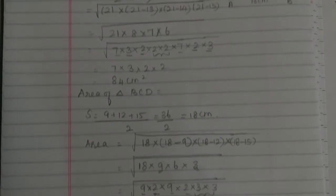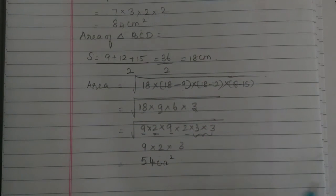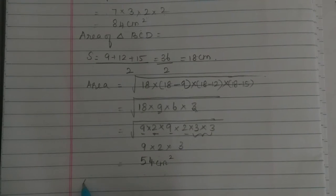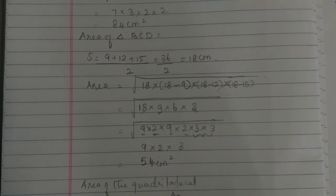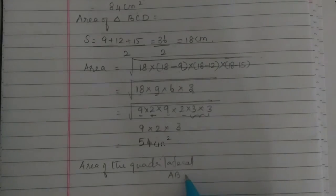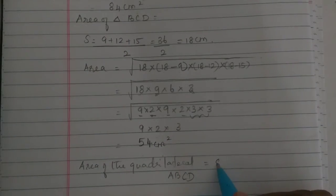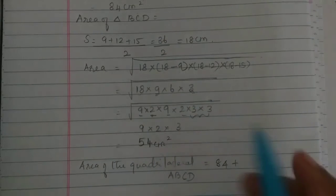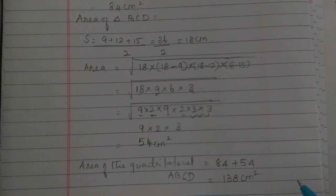So area of triangle ABD is 84 cm² and area of triangle BCD is 54 cm². Now, the area of the quadrilateral ABCD equals area of triangle ABD plus area of triangle BCD, which is 84 plus 54, equal to 138 cm². That is all.